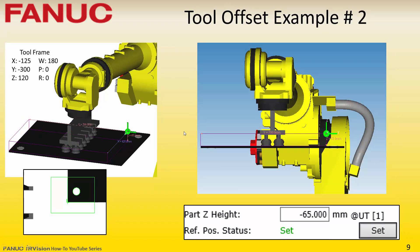In this second tool offset example, the tool frame origin is moved to some random location and the orientation of the tool frame is changed such that the Z axis points up. The part Z height for this case is negative 65 millimeters, negative because the Z axis points up and the feature is located below the TCP.